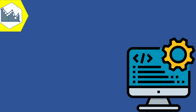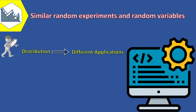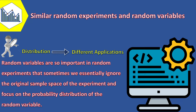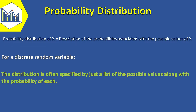Many physical systems can be modeled by the same or similar random experiments and random variables. The distribution of the random variables involved in each of these common systems can be analyzed and the results can be used in different applications. In fact, random variables are so important that sometimes we essentially ignore the original sample space of the experiment and focus on the probability distribution of the random variable. The probability distribution of a random variable X is a description of the probabilities associated with the possible values of X. For a discrete random variable, the distribution is often specified by a list of the possible values along with the probability of each.